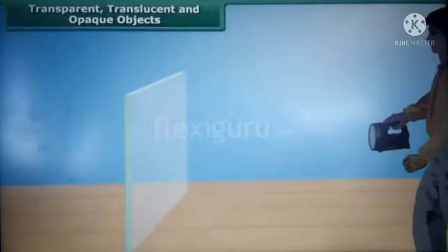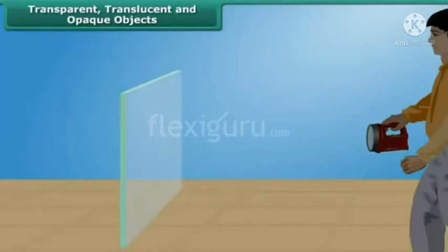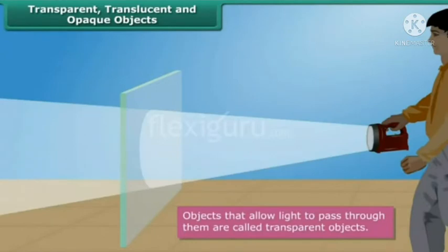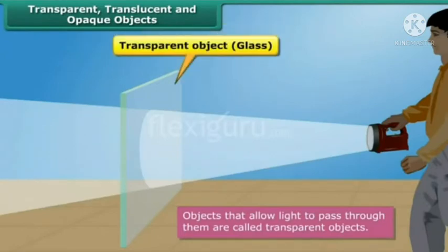Let us watch this video. Objects are classified as transparent, translucent, or opaque depending upon their treatment of light. Objects that allow light to pass through them are called transparent objects. Most of the light falling upon a transparent object passes through it to the other side, thereby allowing us to see through them. Glass, clean air, pure water, etc. are examples of transparent objects.